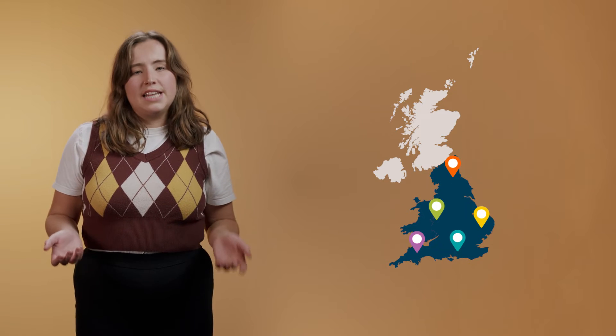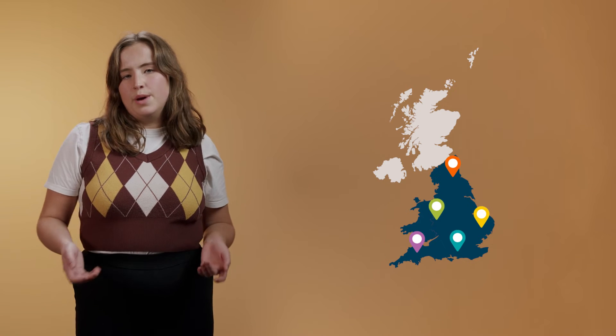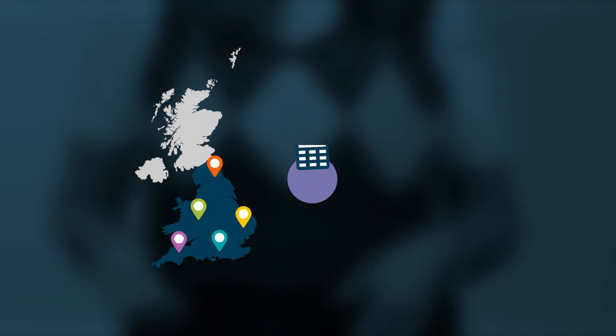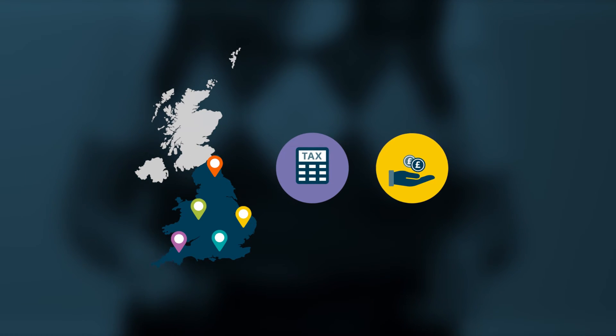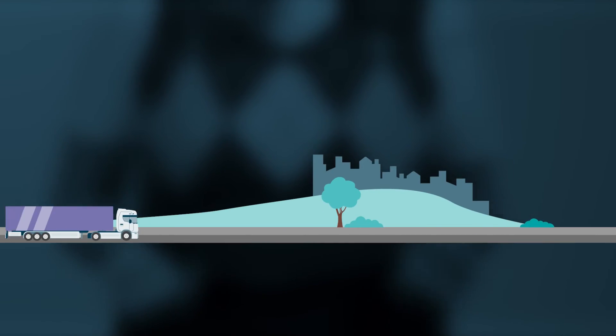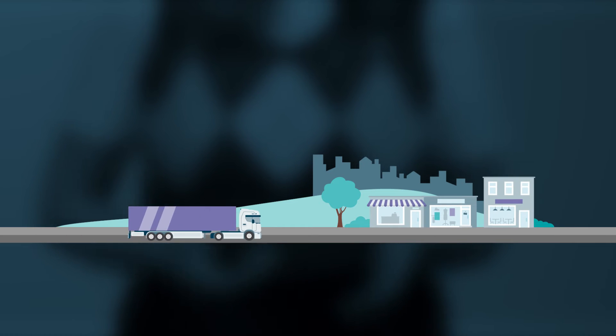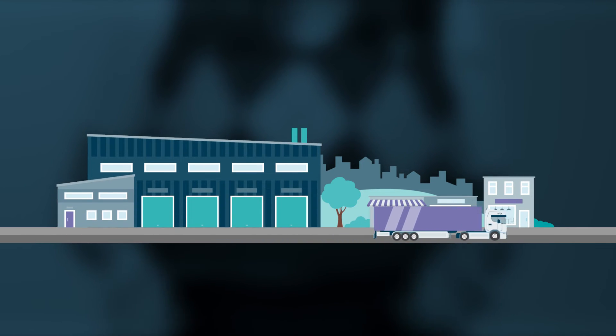We ask people for their data through surveys and the census of England and Wales. We also use existing data that other organisations collect, which includes information people have given when they use public services, like the tax and benefit systems. And we use data from organisations like retailers and transport companies.